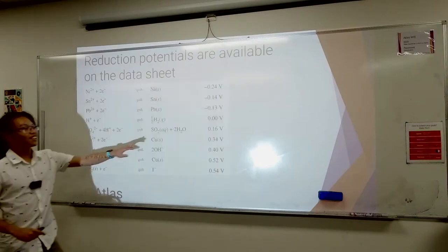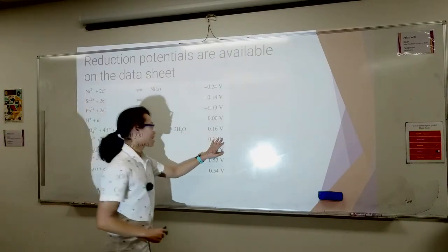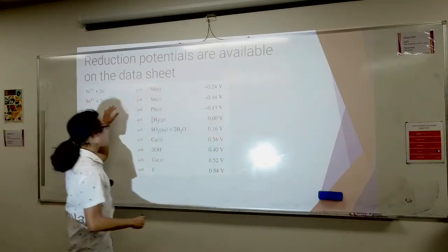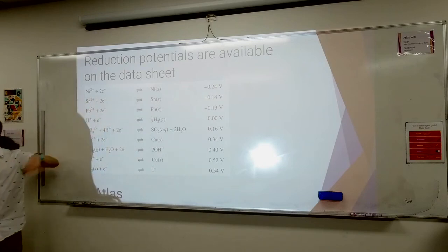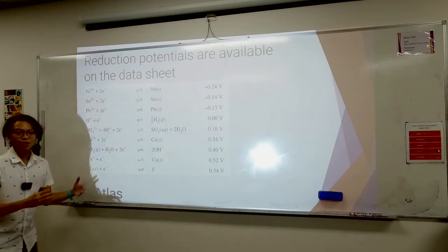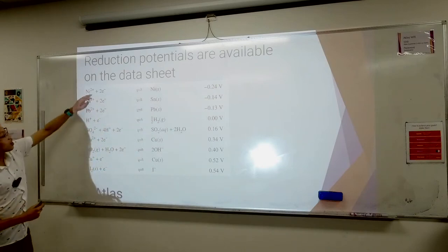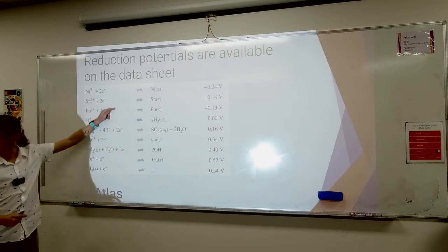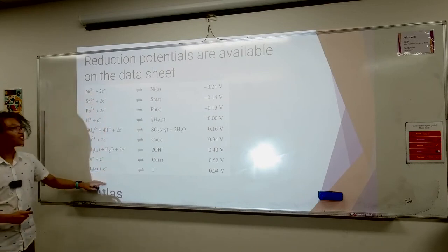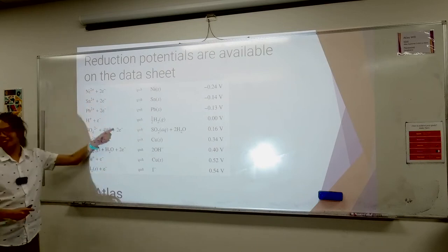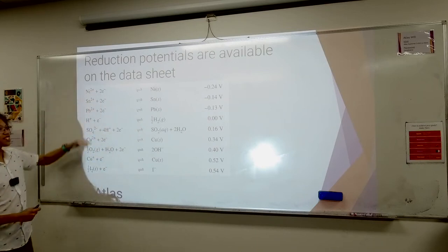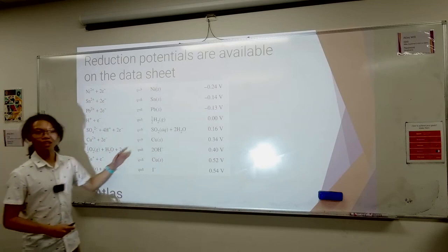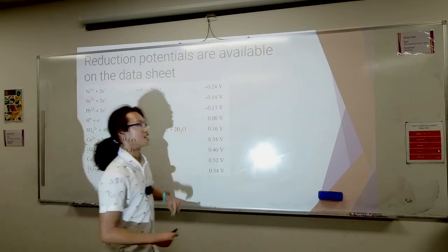So these numbers tell you how good this reaction is at reduction. And now it starts to make more sense. Look at these - they're all reduction half-reactions, right? They all have electrons on the left-hand side. So these are all reductions, and these numbers are all telling you how good each one is.